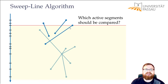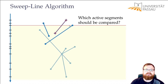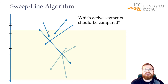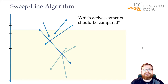So when a segment enters, we only compare it to its neighbor. We keep moving and get the next segment. We compare it with its neighbor — they don't intersect. We don't find a particular intersection right now, but this is okay because we will find it in the future.